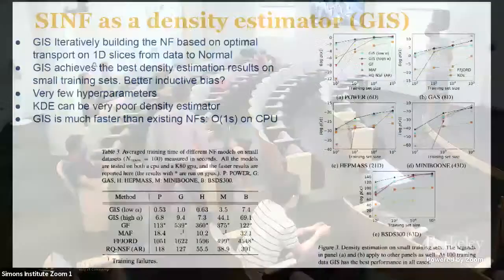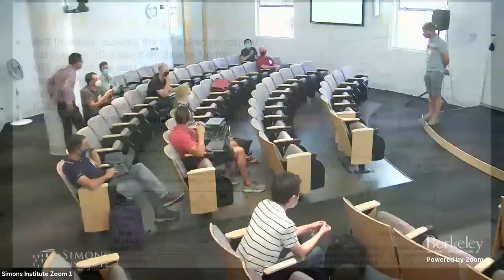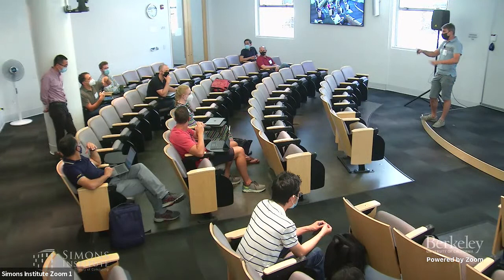Once you have done one step and pushed forward your initial distribution by this one-dimensional map — it can be K-dimensional — one iteration involves these K dimensions.